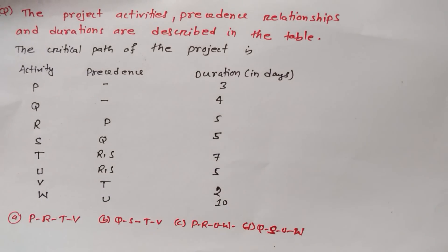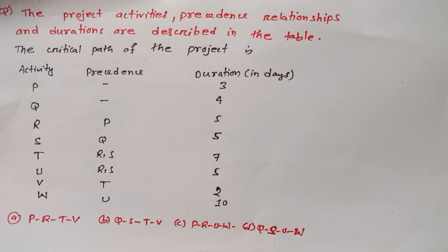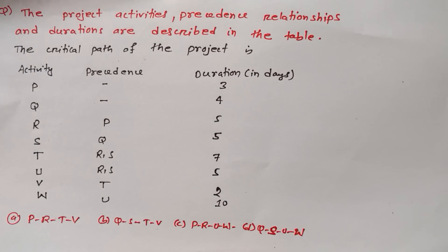I got a question, this is the question of project activities. In this question we are having a lot of activities, precedence and duration, and we have to find out which one is providing the critical path of the project.